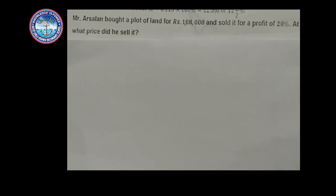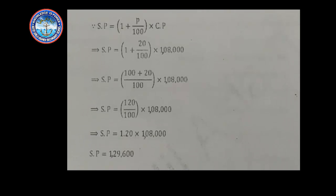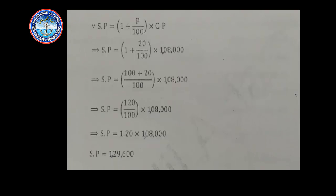Write down the formula: selling price = (1 + profit/100) × cost price. Putting in the values: selling price = (1 + 20/100) × 1,08,000. Taking LCM inside the bracket: selling price = (100 + 20)/100 × 1,08,000 = 120/100 × 1,08,000 = 1.20 × 1,08,000.